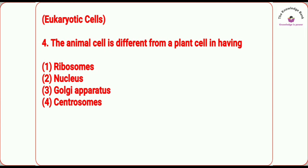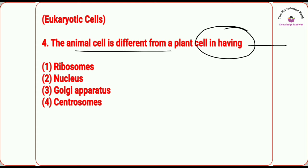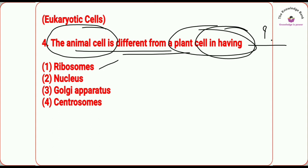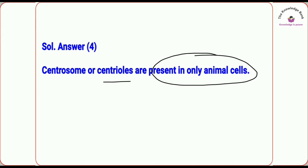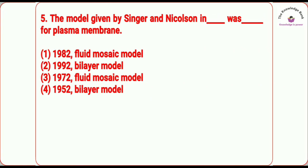Question number four, discussing eukaryotic cells: the animal cell is different from a plant cell in having 'dash.' The options are ribosomes, nucleus, golgi apparatus, and centrosomes. The correct answer is centrosomes. Centrosomes or centrioles are present only in animal cells — that is the reason centrosomes is the right answer.